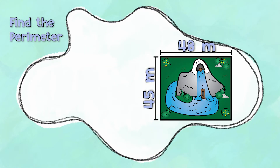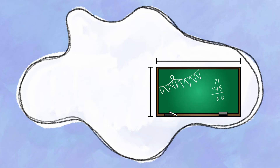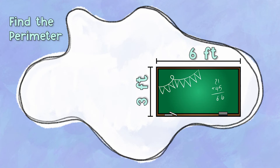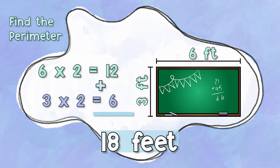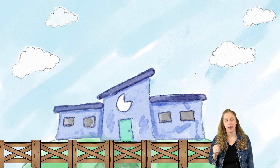Now that we've done a few together, I want you to try a few on your own. Remember, you can always pause this video and take as much time as you need. Pick the strategy that works best for you. Find the perimeter: this hot air balloon is 48 meters in length and 45 meters in width. Now try this one: a chalkboard with a length of six feet and a width of three feet. Did you get it correct? What strategy did you use?